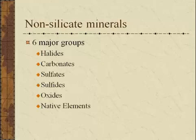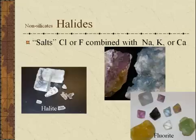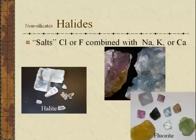There are six major non-silicate mineral groups: the halides, the carbonates, sulfates, sulfides, oxides, and native elements. The non-silicate group halides are often referred to as salts. In this case, the element chlorine or fluorine is combined with the metals sodium, potassium, or calcium. Sodium chloride is a very common, frequently used mineral. Another one, fluorite, is a calcium fluoride, and it's unique because it comes in many different colors.